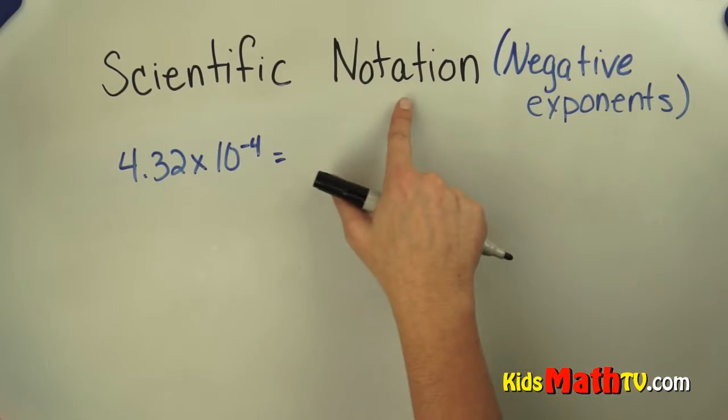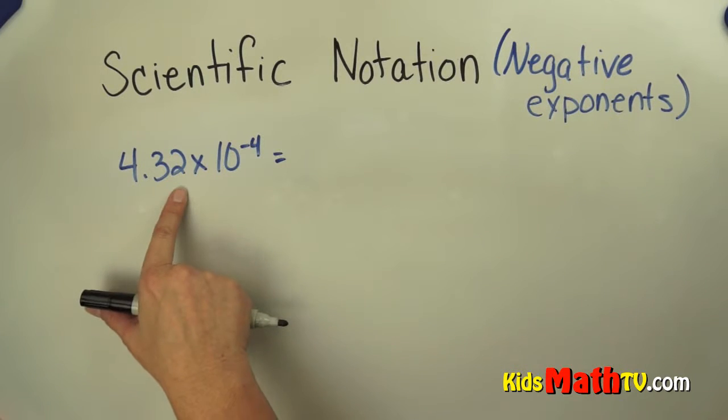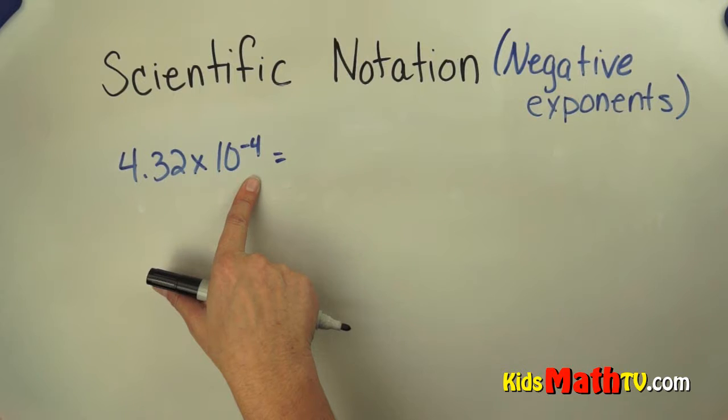In this lesson we'll learn about scientific notation with negative exponents. So here we have 4.32 times 10 to the negative 4.